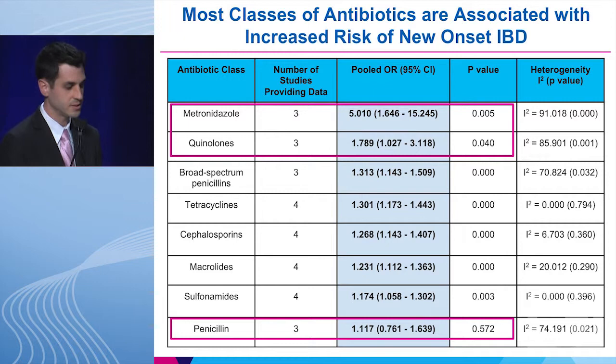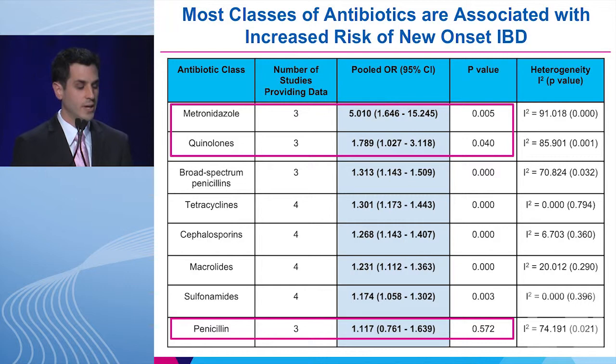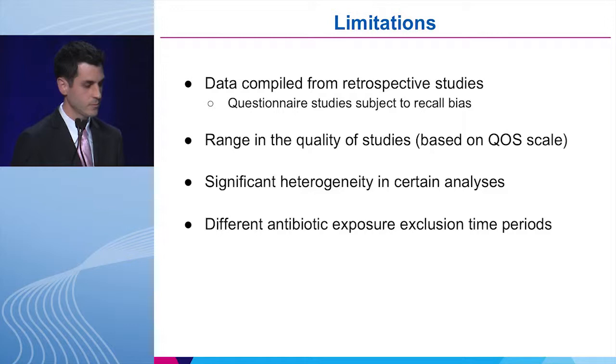Next, we looked at specific classes of antibiotics. In this table, the left-hand side lists specific antibiotics, and the highlighted middle column shows the pooled odds ratios from the included studies. Essentially, all antibiotics for which we had data were associated with new onset IBD, with the exception of penicillin. Somewhat paradoxically, the two antibiotics with the highest odds ratios for new onset IBD were metronidazole and quinolones.